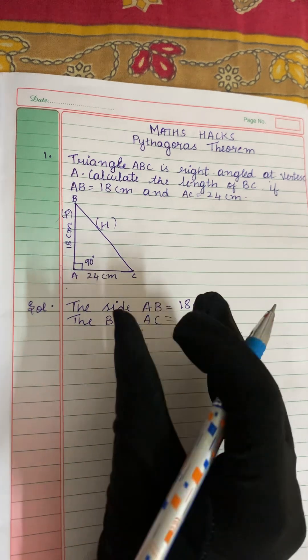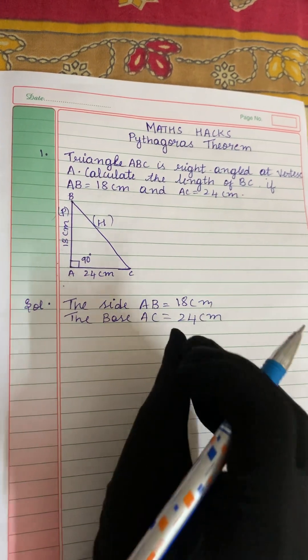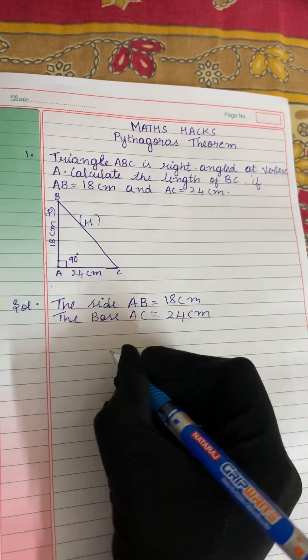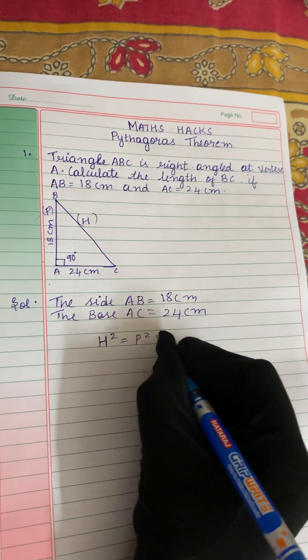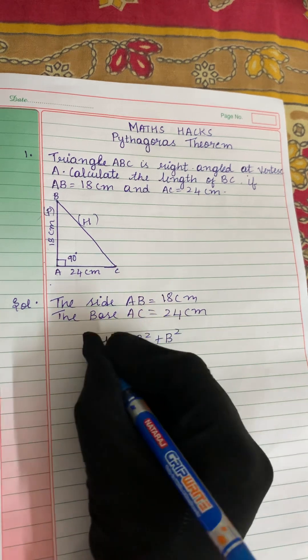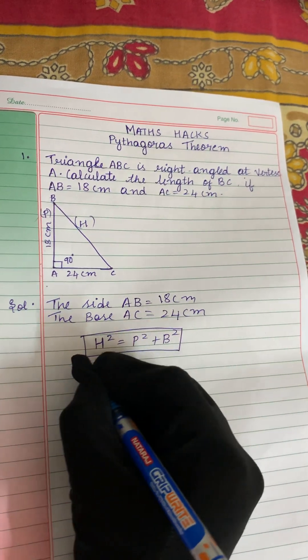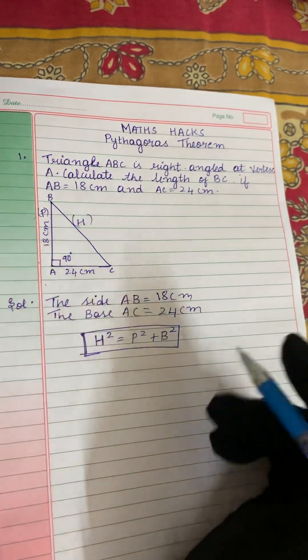To find out the value of BC, we will apply the Pythagoras theorem formula. So what is the formula? H² is equal to P² plus B². So this is the formula we are applying in this question.